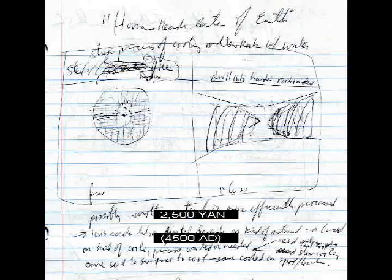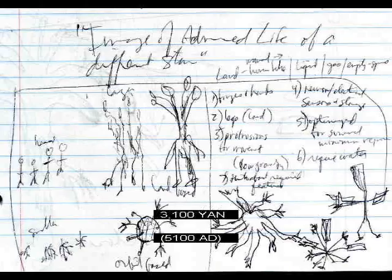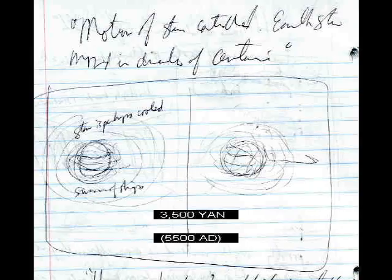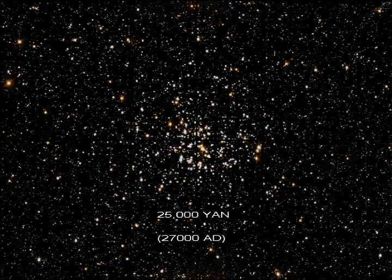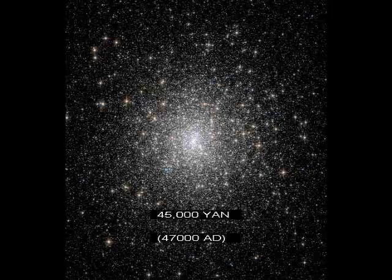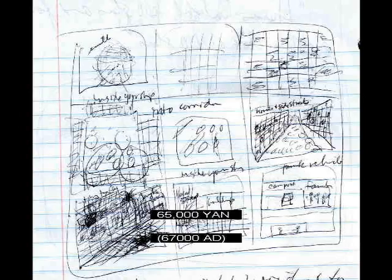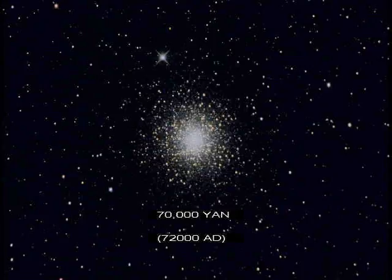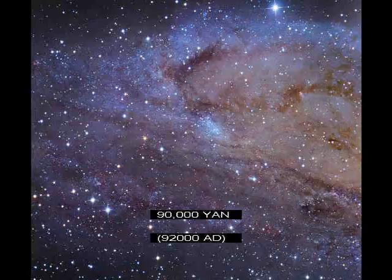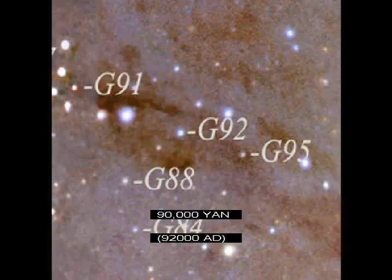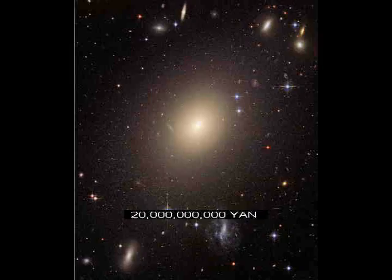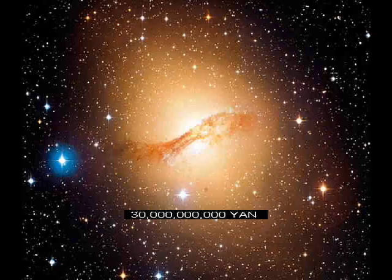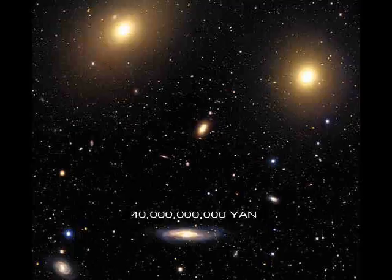Humans have ships at 10 stars. Motion of all planets under control. Humans reach the center of the Earth. Image of advanced life of a different star. Motion of star controlled. Earth's star moved in direction of Centauri. Humans touch advanced life of a different star. 1 trillion humans. Humans inhabit 100 stars and form a globular cluster of 10 stars. Humans inhabit 1,000 stars and form a globular cluster of 100 stars. Earth is completely filled with living objects. Humans inhabit 10,000 stars and form a globular cluster of 1,000 stars. Human-made globular cluster of 10,000 stars leaves the plane of the Milky Way galaxy. All planets of Earth's star consumed. Earth's star consumed. 10 to the power of 100 humans. The Milky Way is a globular galaxy. Milky Way globular galaxy integrates with Magellanic cloud galaxies. Milky Way and Andromeda globular galaxies join.